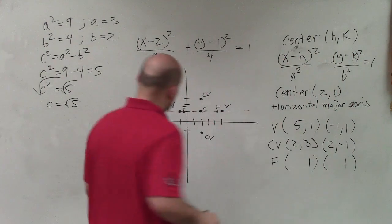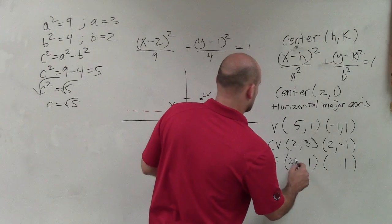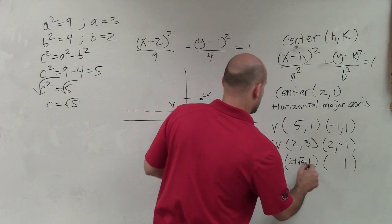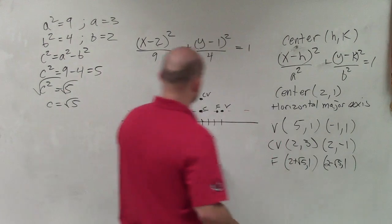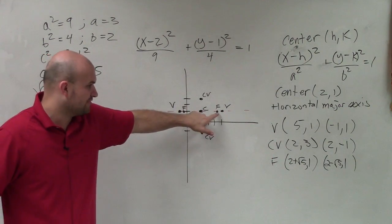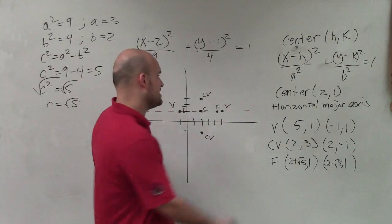But now I just went 2 + √5 and 2 - √5. That's all I put in there. I took 2 and I added √5, and then I subtracted √5. So those are going to be my two foci.